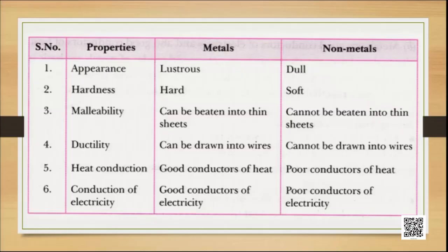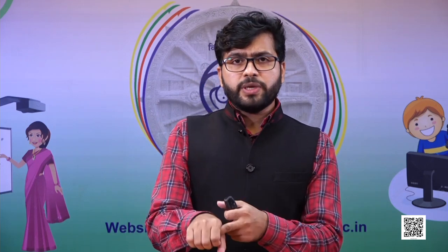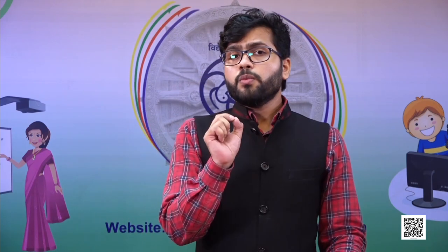Moving on to the next property: heat conduction. The utensils we use at home are made up of metals like aluminum vessels because metals are good conductors of heat. Non-metals are poor conductors of heat, and that is why we use metals to make cooking vessels. Whereas a pan has a wooden handle — wood is made up of non-metals — because non-metals do not conduct heat, so we can hold the pan without damaging the skin. But here also exceptions exist: mercury and lead are two metals which are poor conductors of heat.